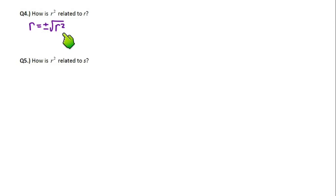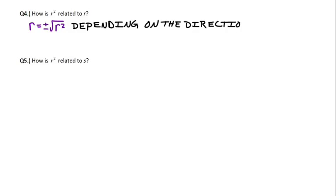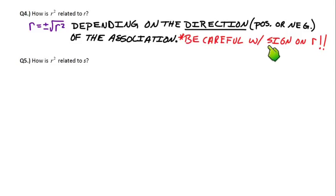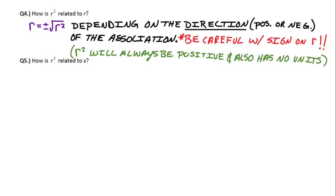How are R-squared and R actually related? If you're given R-squared and want to solve for R, you just take the square root — but it could be plus or minus, and you have to know which one. That depends on the direction of the association: is it positive or negative? A careless mistake many people make is the sign on R. If you see a negative association and they gave you R-squared, when you take the square root, make sure R is negative in your answer. R-squared will always be positive because you're squaring a number, and it also has no units.